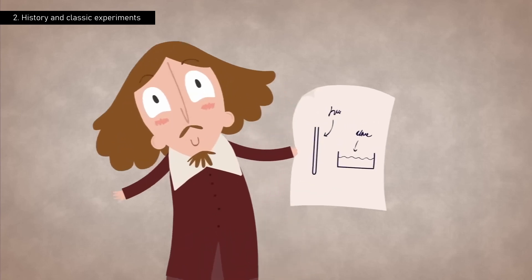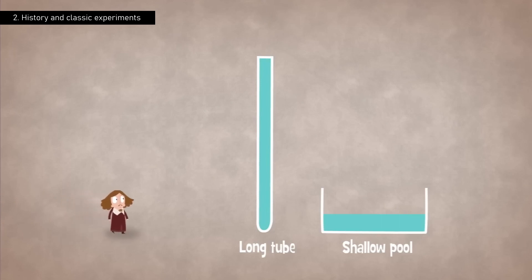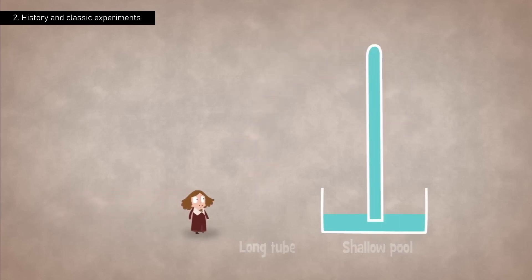The crucial moment of the experiment came when Berti opened the lower cap of the tube, allowing the water to flow into the pool. To everyone's surprise, the water did not empty completely. Instead, it stopped at a height of approximately 10 meters inside the tube. At the top, where there had been water, a vacuum now appeared.